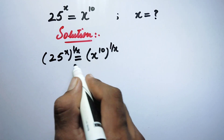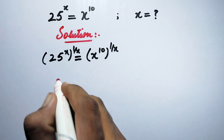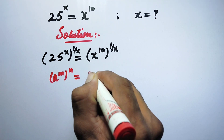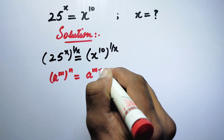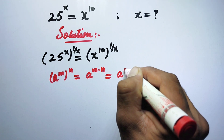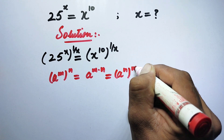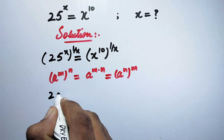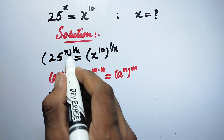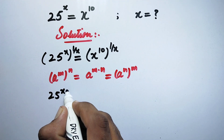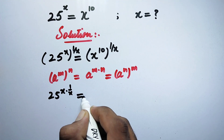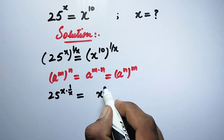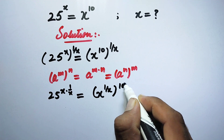Now here we will follow an exponential property. As we know, a to the power m to the power n is equal to a to the power m times n, or it is also equal to a to the power n to the power m. Therefore here we can write 25 to the power x times 1 over x, and here it will be x to the power 1 over x to the power 10.